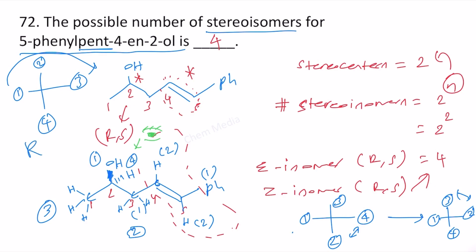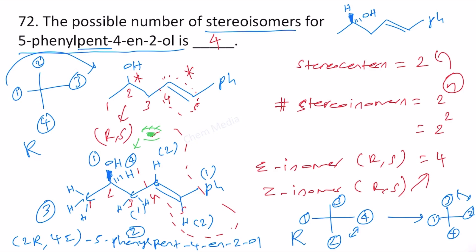Therefore the correct IUPAC name is (2R,4E)-5-phenyl pent-4-en-2-ol. If hydrogen is towards us instead of the OH, this becomes (2S,4E)-5-phenyl pent-4-en-2-ol. Likewise we can draw (2R,4Z) and (2S,4Z) isomers. For the Z isomers, both hydrogen atoms need to be placed on the same side.